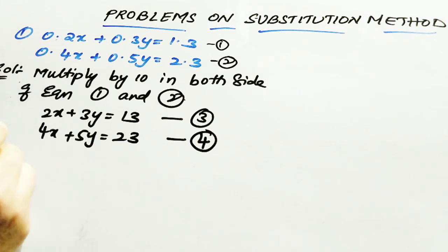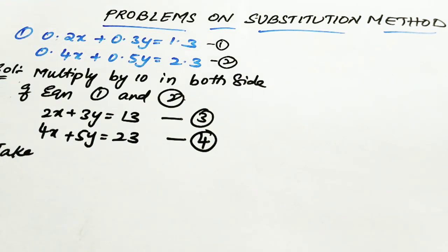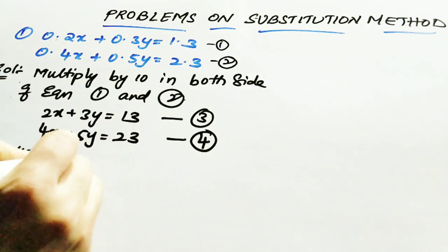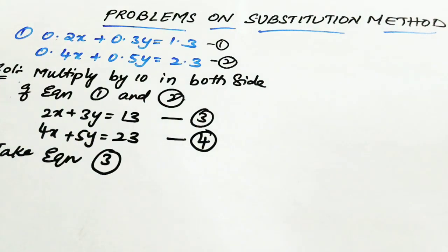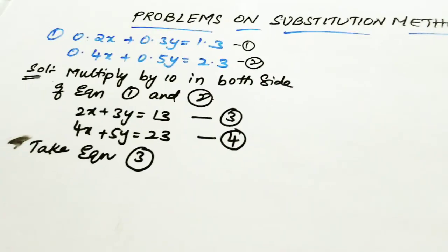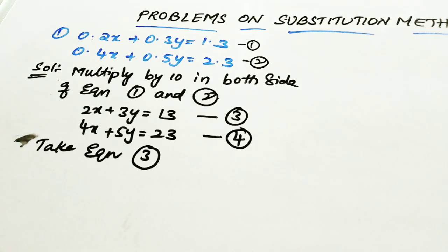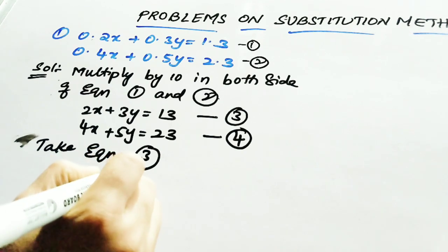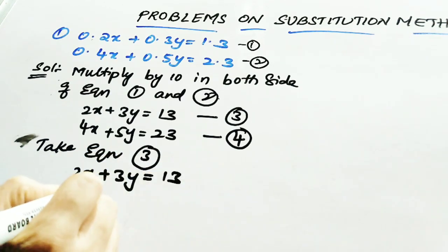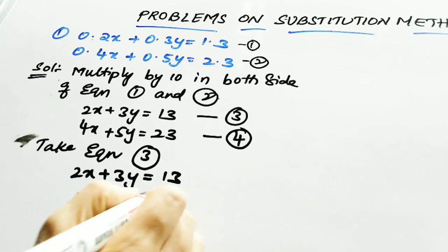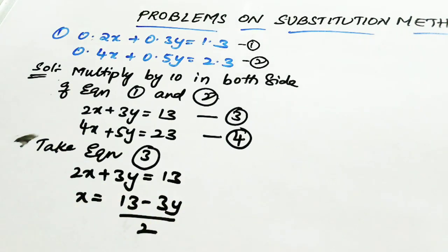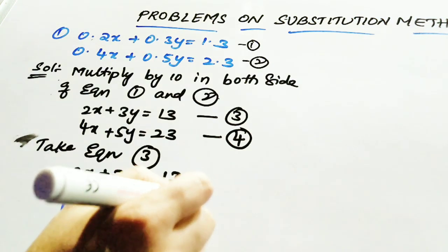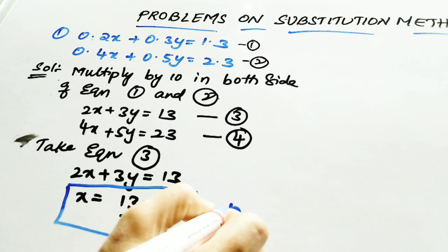Take one equation — I am taking equation 3, whichever has the smaller coefficient. Your equation is 2x plus 3y equal to 13. Rearranging: x is equal to 13 minus 3y, divided by 2. You have got the value of x. Consider this as equation 5.